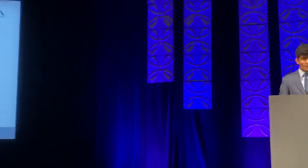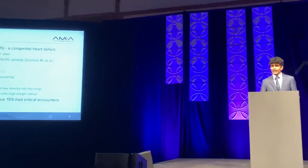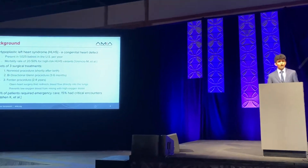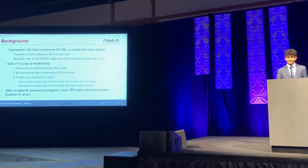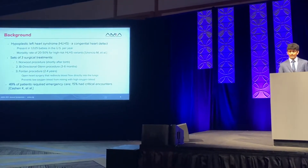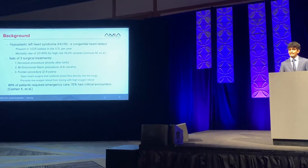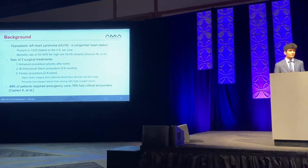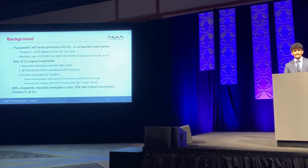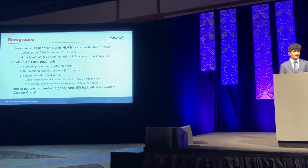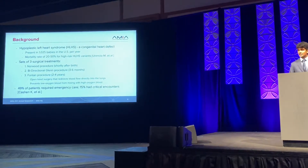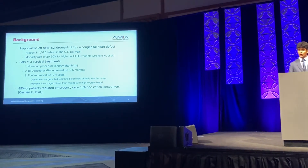Now on to some background on the disease. Hypoplastic left heart syndrome, or HLHS, is a congenital heart defect present in 1,025 babies in the U.S. each year. There is a mortality rate of 20 to 50 percent for the high-risk HLHS variants. Fortunately, this number has gone down over the years thanks to a set of three surgical procedures that most HLHS patients undergo.